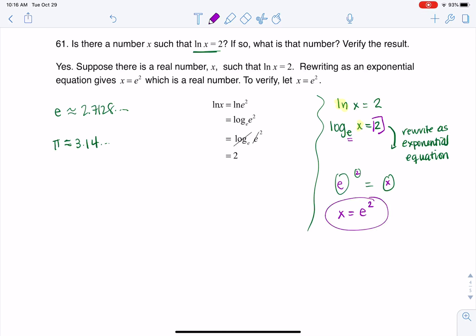So what is that number that will let ln of x be equal to 2? Well, if x is e squared, we're looking at it. So let's go ahead. I'm going to block this off. Let's check our work.